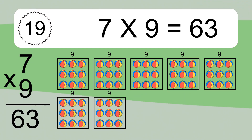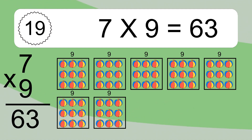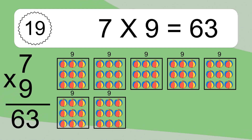We have 7 boxes, and each box has 9 colorful balls inside. If you count all the balls in all the boxes together, you will have 7 times 9 balls. This equals 63 balls.